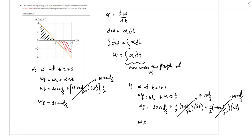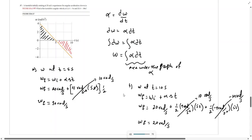So the final angular velocity at t equals 10 seconds is 20 radians per second. This makes sense because the same magnitude of positive angular acceleration from 0 to 5 seconds is matched by an equal negative angular acceleration from 5 to 10 seconds. Thank you for your attention. I hope this exercise helps you understand the relation between angular acceleration and angular velocity — and remember to subscribe to our channel.